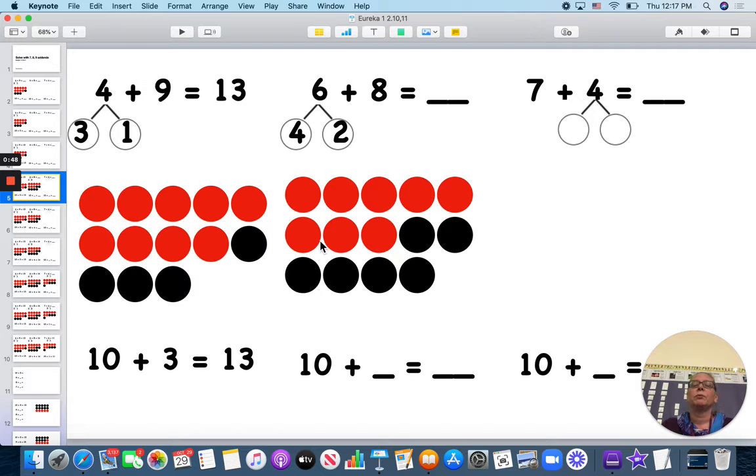1, 2, 3, 4, 5, 6, but I used 2 to fill the 10 frame, 4 left over. So that means 10 and 4 on the bottom, see that? So 6 plus 8 and 10 plus 4 is 14.